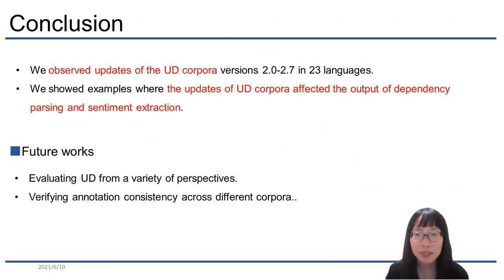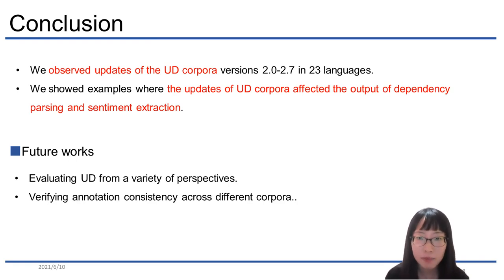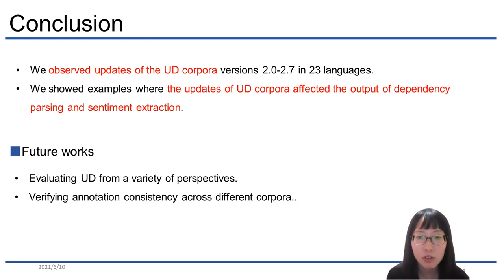In conclusion, we observed updates of the UD corpus version 2.0 to 2.7 in 23 languages, and showed examples where updates have either adversely or positively affected the output of dependency parsing and sentiment detection. Our methodology is effective at finding changes with sentiment detection, and those changes often reveal important aspects of syntax. In some languages, UD corpus updates have slowed down, but there are still open problems in fundamental syntactic structures. We anticipate continuous improvements to multilingual corpora for UD communities worldwide, and hope that the emergence of other applications utilizing UD's syntax structures will lead to further discussions and enhancements.